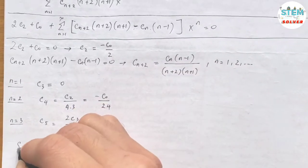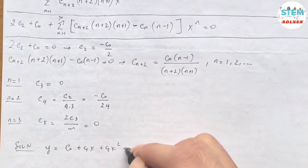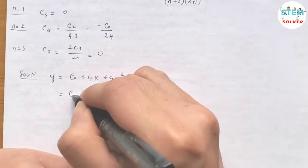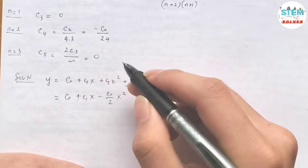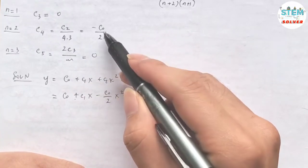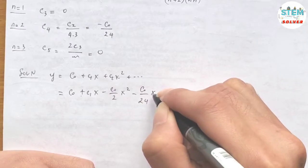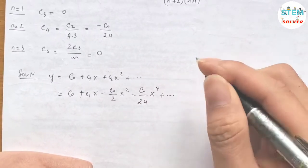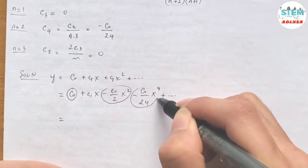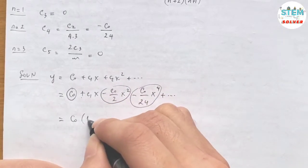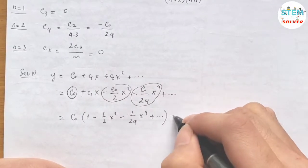So I'm going to write my solution here. So my solution is equal to c0 plus c1 x plus c2 x square plus... What is c0? C0, we don't know, just rewrite it. What is c1? C1, we don't know, just rewrite it. What is c2? C2 is negative c0 over 2. What is c3? C3 is 0. What is c4? C4 is negative c0 over 24, x to the 4th plus... And then take a look at the c0 term and factor it out. So in parentheses, I have 1 minus 1 half x square minus 1 over 24 x to the 4th plus... plus c1 x.